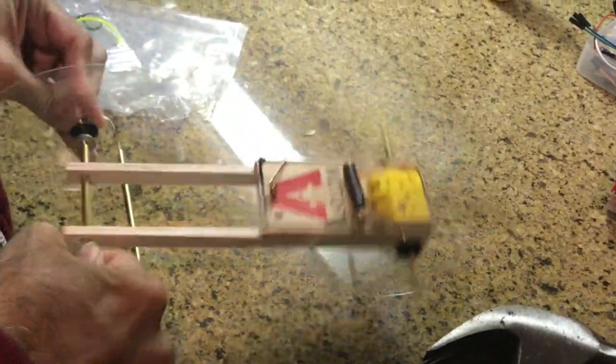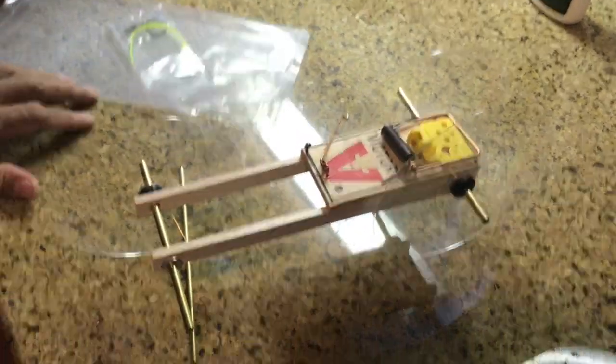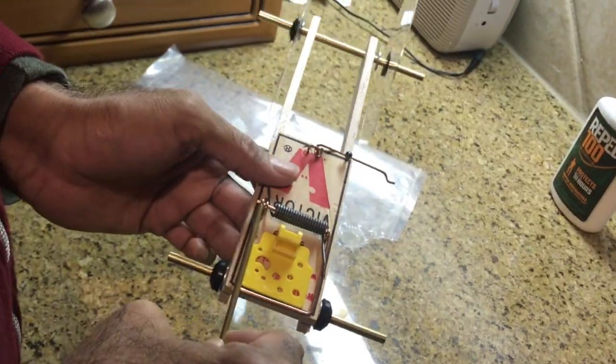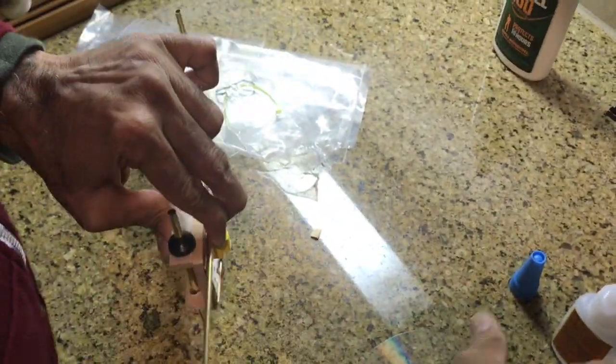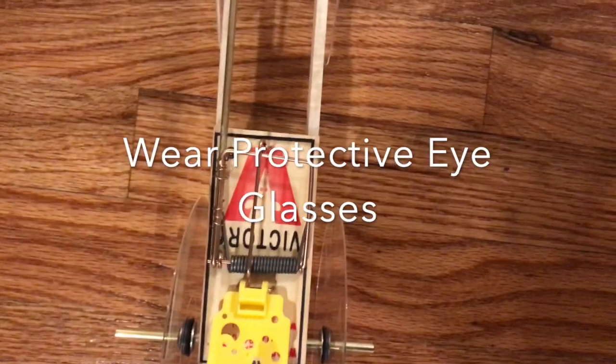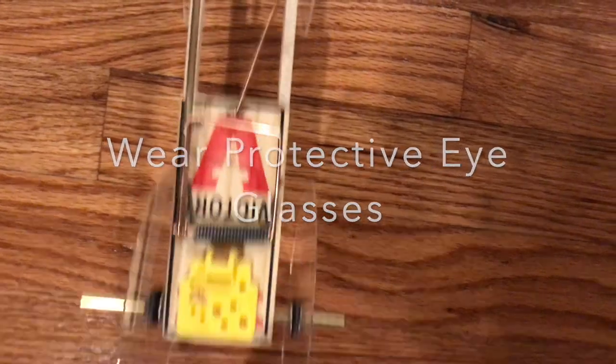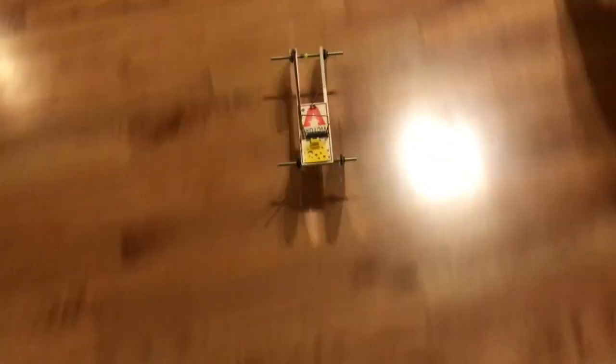Now we're going to extend the arm of the mouse trap. We're going to attach aluminum rod to extend the arm, and then connect this arm to the front wheel axle using a thread. We're going to wind that thread on that wheel or the axle, and that's how the potential energy from the spring in the mouse trap is going to get transferred as kinetic energy to the front wheels.